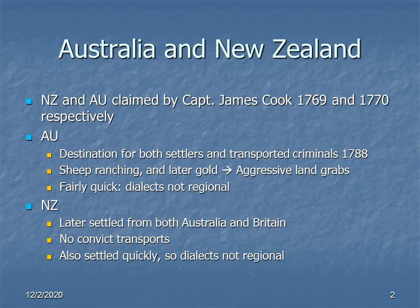From 1788 onward, Australia becomes a destination both for settlers and for transported criminals, often criminals convicted of relatively minor offences, such as trying to feed their children by stealing food.